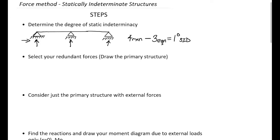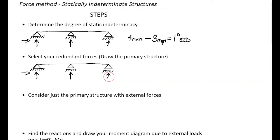Once we've found the degree of static indeterminacy, the next step is to select your redundant forces. You're going to pick a force from this structure and call it an unknown — in other words, you're going to turn this statically indeterminate structure into a statically determinate structure. I can either take this reaction force as a redundant force by removing this support, and take that reaction force as my redundant. It's your decision — there are many ways to pick redundant forces.